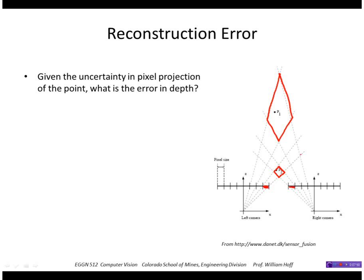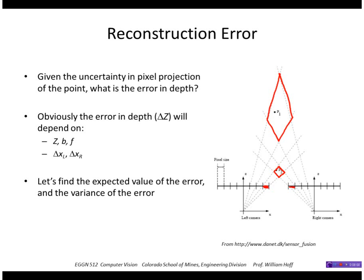If I have a point P1 that's further away, its uncertainty is greater, and it could be anywhere inside that larger quadrilateral. So obviously the error in depth, delta z, will depend on z, b, and f, and also the uncertainties or the errors in the image projections in the left and right images. So let's find the expected value of that error and the variance of the error.